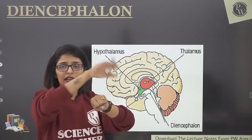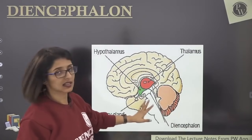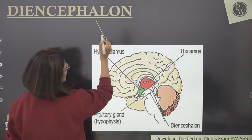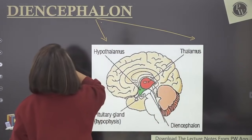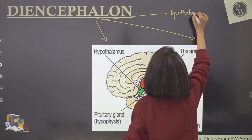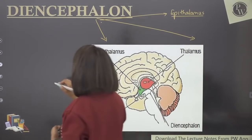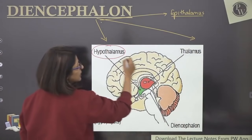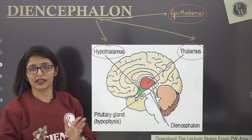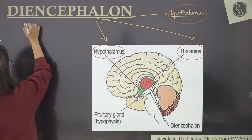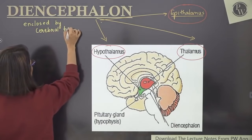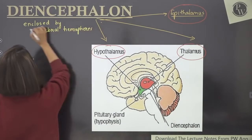Diencephalon has three main parts: thalamus, hypothalamus, and epithalamus. They are enclosed by the cerebral hemispheres. The thalami are two oval bodies that act as a relay center — messages from lower parts pass through thalamus upward to the cortex, and vice versa. Hypo means below, epi means above — so hypothalamus is below thalamus, epithalamus is above.